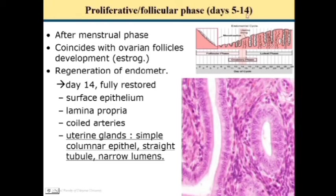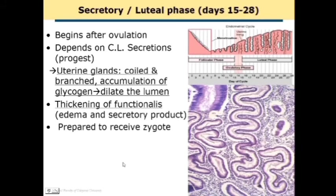The proliferative phase starts from the fifth day of menstruation and extends up to the fourteenth day. It coincides with ovarian follicle development. Under the influence of estrogen, there is regeneration of the endometrium. By day 14, the fully restored endometrium includes surface epithelium, lamina propria, coiled arteries, uterine glands with simple columnar epithelium, and straight tubules.